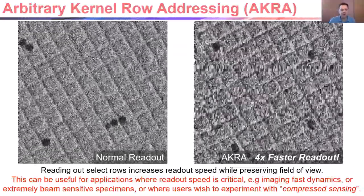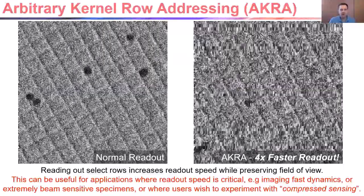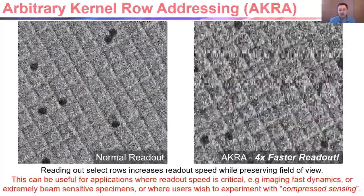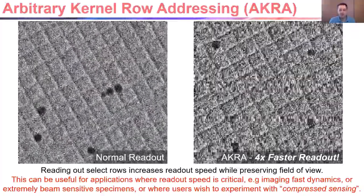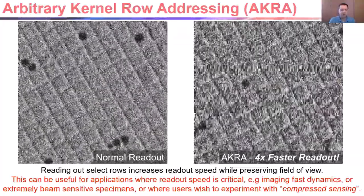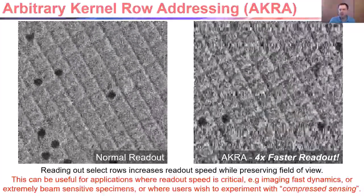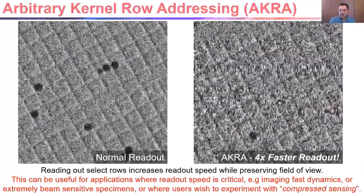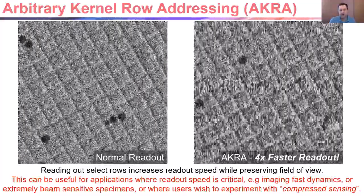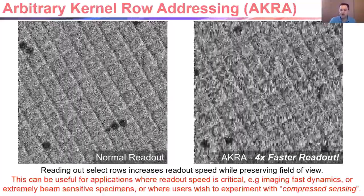For example, the movie on the left was recorded at a normal readout speed, and a similar movie on the right was recorded using only a quarter of the rows from across the sensor with ACRA mode, thereby achieving a roughly four times faster readout speed, with a simple in-painting algorithm used to fill in the images in the movie. ACRA could be helpful where readout speed is crucial, like imaging fast-moving particles, where imaging all of the rows on the camera might not be necessary for identifying the particle's position and orientation. It might also be useful for imaging very beam-sensitive specimens, and where users may want to experiment with image reconstruction and compressed sensing techniques.